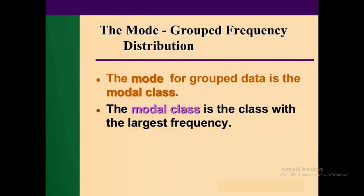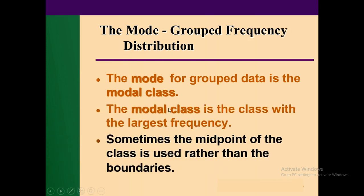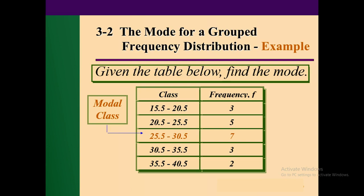اب اگر ہمارے پاس grouped form میں values ہوں تو پھر کیا کریں گے؟ ہم modal class ڈھونڈیں گے، پھر اس کا midpoint اور boundaries معلوم کر کے value معلوم کریں گے۔ یہ دیکھیں class boundaries ہیں — last question والا data ہے۔ 15.5 سے 25.5 تک 3 values، پھر 5 time، پھر 7 time، پھر 3، پھر 2۔ سب سے پہلے modal class دیکھیں — 25.5 سے 30.5 والی class modal class ہو جائے گی کیونکہ اس کی frequency 7 ہے، جو سب سے زیادہ ہے۔